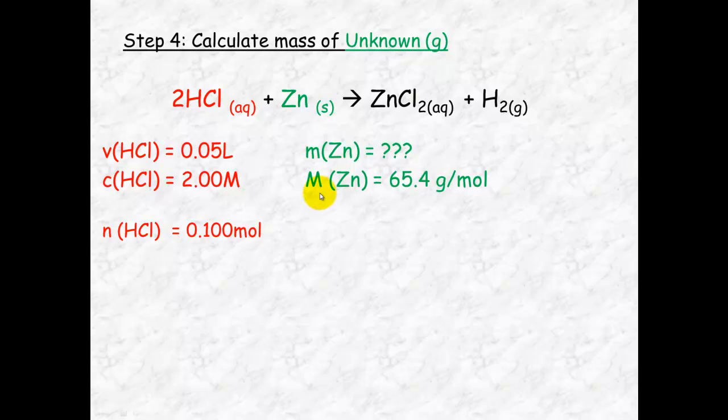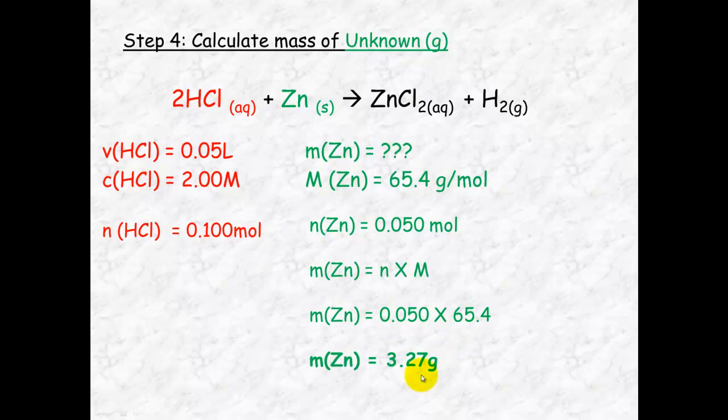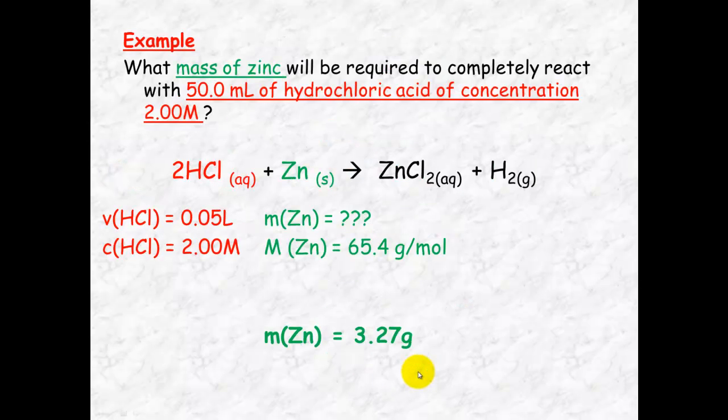So we can move on now that we know the number of mole of zinc. We can then calculate the mass of zinc using n times M. So mass of zinc equals 0.05 times 65.4 and the mass of zinc equals 3.27 grams. At this point again look back at your question and check. I'm looking for the mass of zinc. I've worked out the mass of zinc.